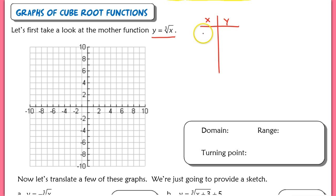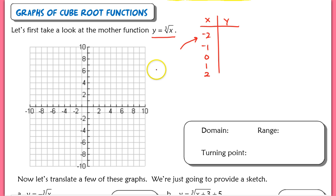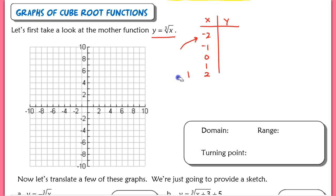Let's say we try to pick values like negative 2 to 2. We can plug in negative values for x because when we take the cube root of a negative value, that does produce a real number. It's different than square roots — you just can't take the square root of a negative number, but it does work for cube roots. However, if we try negative 2, we'd have to graph the cube root of negative 2, which is very difficult because we need a decimal approximation and that's not a nice number.